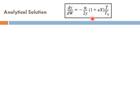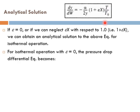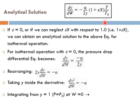Apparently we can do it in a special case. If ε equals 0 or if we can neglect εX with respect to 1, we can obtain an analytical solution to the above equation for isothermal operation where T over T₀ equals 1. For isothermal operation with ε equals 0, the pressure drop differential equation becomes very simple: dy/dW equals minus α over 2y.